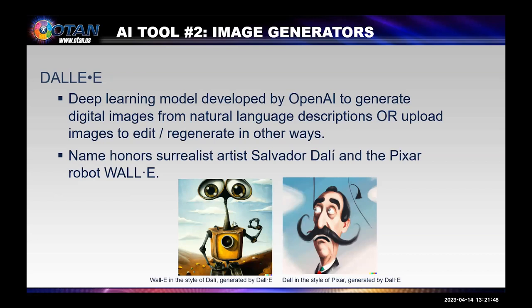Now let's transition to some other types of AI tools. The next set of tools is image generators, and DALL-E is one. It is a deep learning model developed by OpenAI, the same company that made ChatGPT, to generate digital images from natural language descriptions or upload images to edit or regenerate in other ways. DALL-E's name honors the surreal artist Salvador Dali and the Pixar robot WALL-E. The images included here were generated by DALL-E: the first is WALL-E in the style of Dali, and the second is Dali in the style of Pixar.